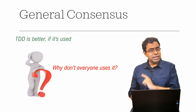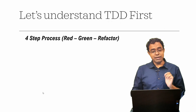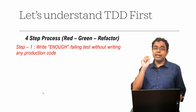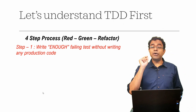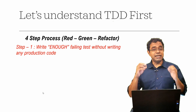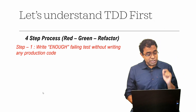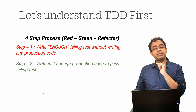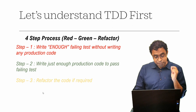TDD is a four-step process, also called red-green-refactor. Step one — the red part — is about writing enough failing tests without writing any production code. The term 'enough' is subjective; it depends on the individual developer. Step two is writing just enough production code to pass those failing tests written in step one — that is the green step.